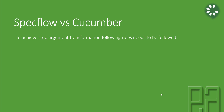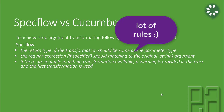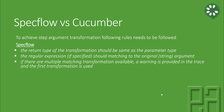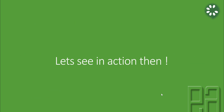To achieve a step argument transformation, the following rules need to be followed. In SpecFlow, the return type of a transformation should be the same as the parameter type, the regular expression should match the original argument, and if there are multiple matching transformations a warning is provided in the trace log and the first transformation is used. In Cucumber, there are no such strict rules — you just need to extend a class to the Transformer type, override the transform method, and then annotate the argument you need to convert with the @Transform annotation.